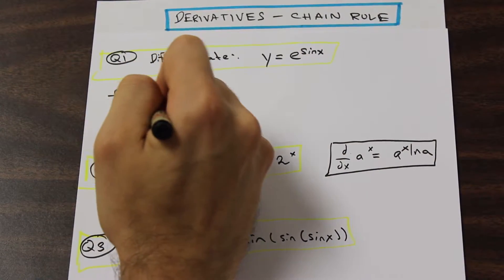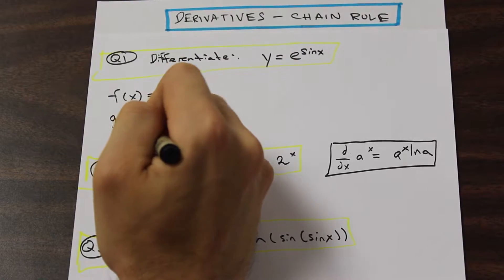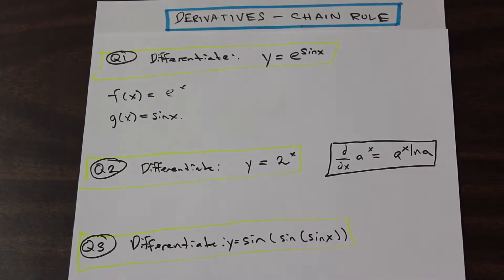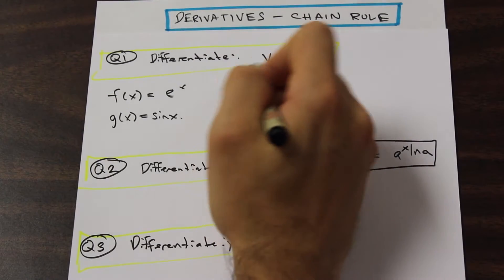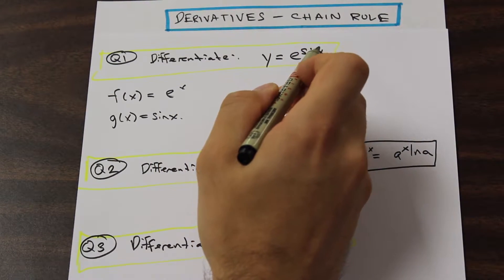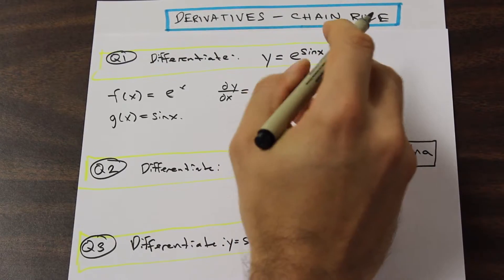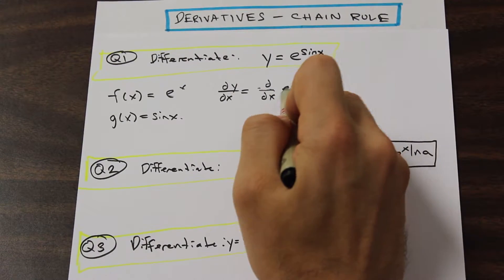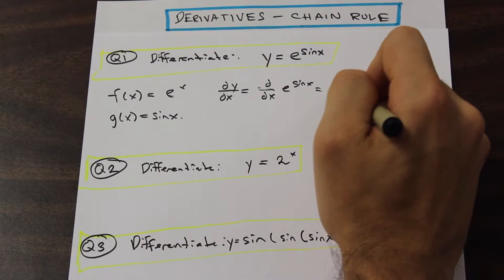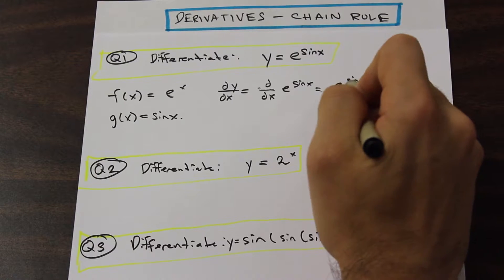So we're going to say that f of x is equal to e to the x, and g of x is equal to sine x. And if you remember the definition from the past video — f prime of g of x times g prime of x — go back and look at that if you don't know what I'm talking about. So this is our outer function and our inner function. We're going to apply the chain rule: dy by dx is equal to e to the sine x, and we multiply by the derivative of the inner function g of x. The derivative of sine x is cos x.